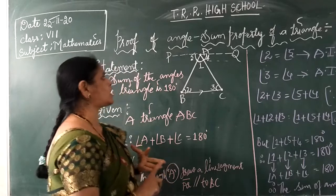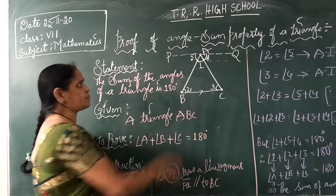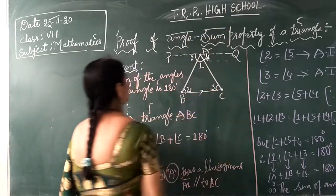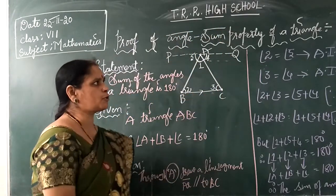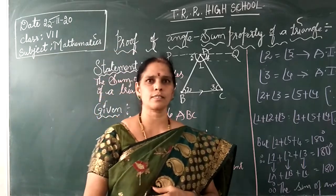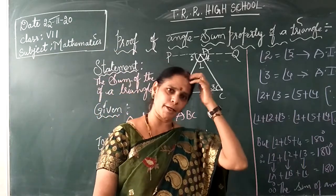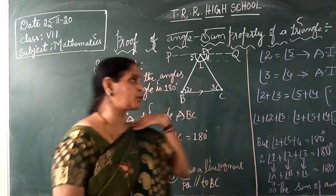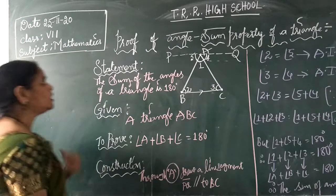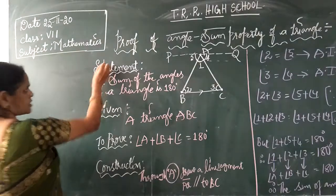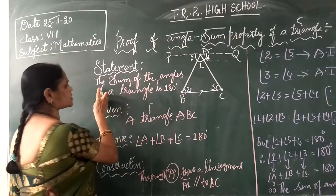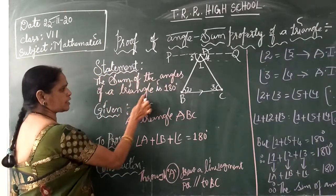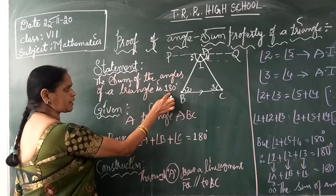And next is angles of property. This is angles of property. Already you know the sum of three angles is equal to 180 degrees. This is the statement: the sum of angles of a triangle is 180 degrees.